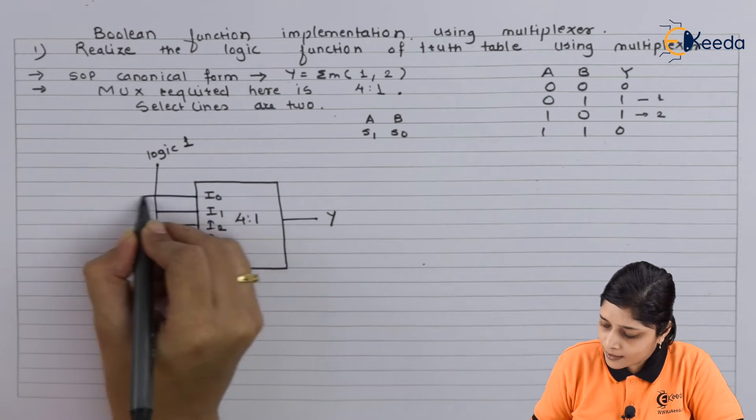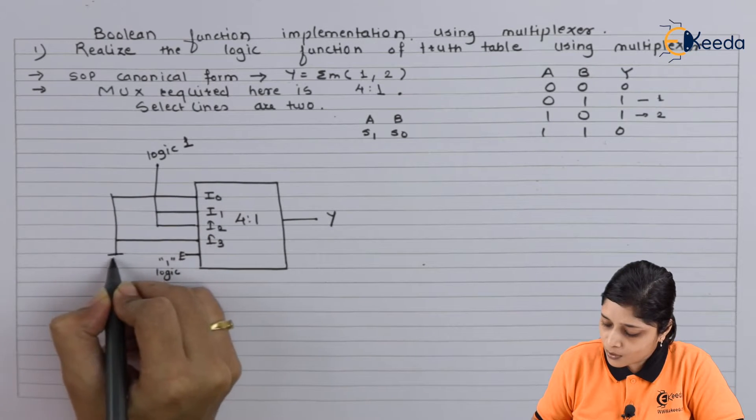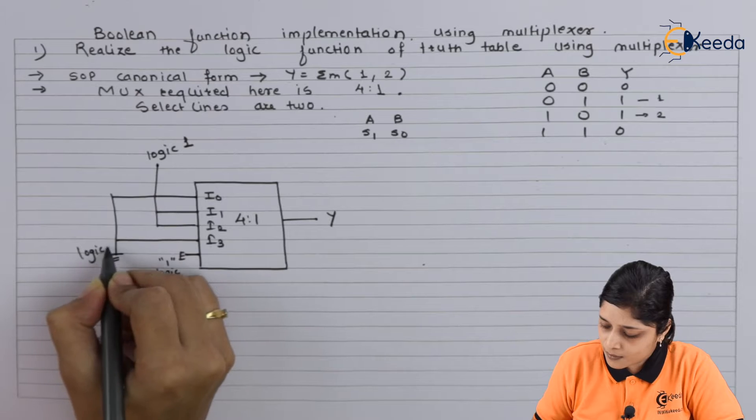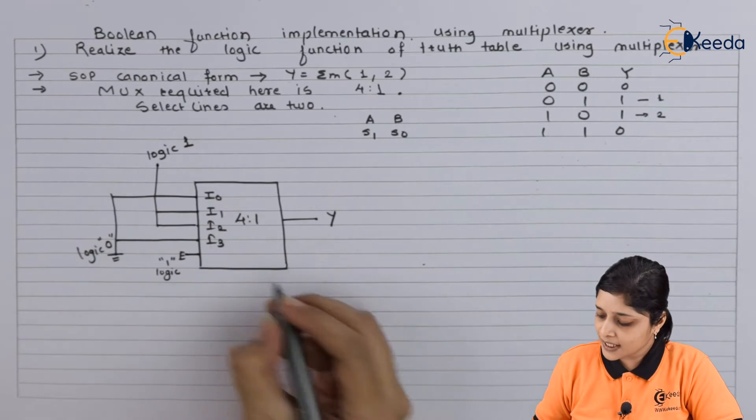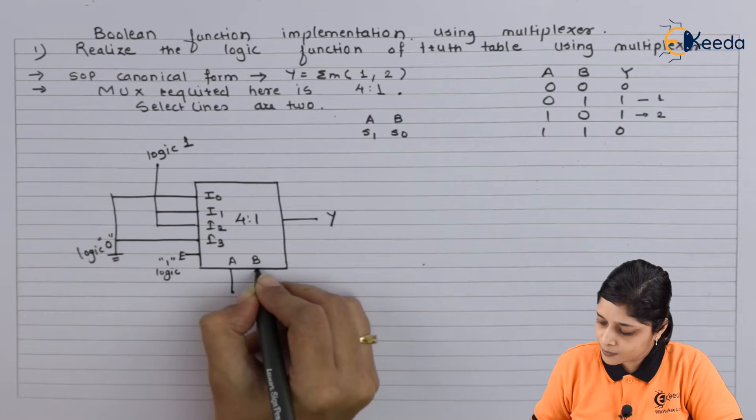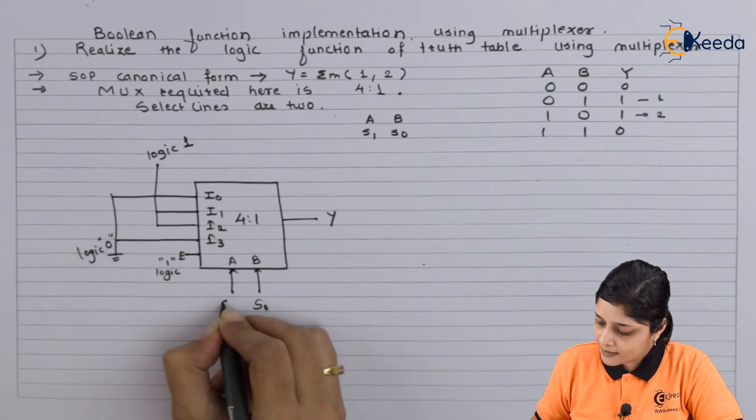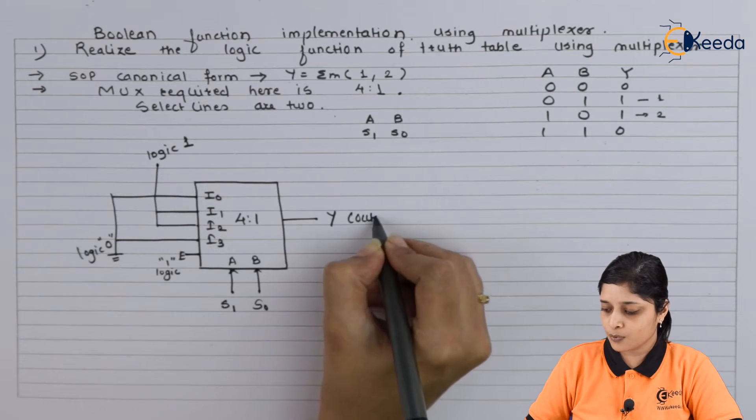And i0 and i3 for logic zero. And what about select lines? A and B are the select lines we have, s0 and s1, and this is your output.